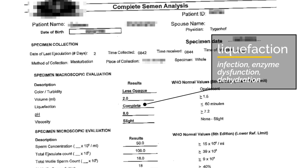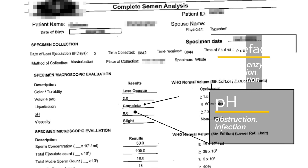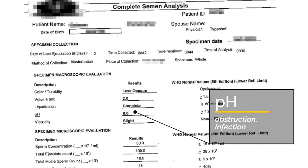Liquefaction is how rapidly the semen gel turns into a liquid. Infections and dehydration can cause abnormal liquefaction. This process relies on certain enzymes in the semen, so if those enzymes are abnormal due to genetic issues, that could be another cause. The pH of the semen should be greater than 7.2. A high pH could indicate infection, while a low pH could indicate blockage of the seminal vesicles. An abnormal pH affects the sperm and the enzymes in the semen.